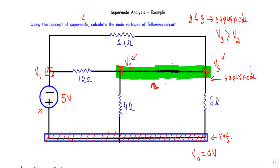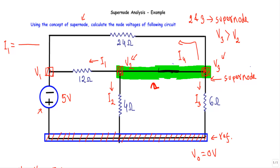With the super node, we don't have any current source connected, so all the currents will be unknown. During nodal analysis, all unknown currents are assumed to be outgoing. The current outgoing in this direction is I1, outgoing in this direction is I2, outgoing in this direction is I3, and outgoing in this direction is I4. I1 is the current flowing from node two towards node one, so node two is at higher potential.